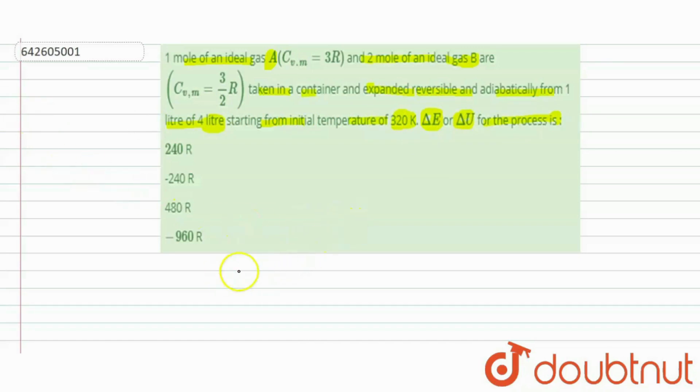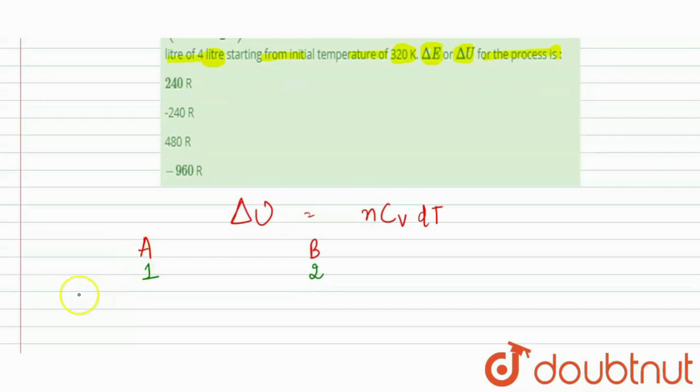As we know that delta U is equal to nCvdT. In the question, let's see what's given to us. First for A and here for B. We are given with the moles: 1 mole for A gas and 2 for B. We are given with the Cv values 3R and 3 by 2R. Volume changes from 1 litre to 4 litre, so V1 is 1 litre and V2 is 4 litre. Initial temperature T1 is equal to 320 Kelvin.